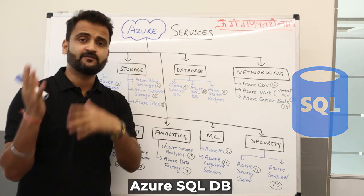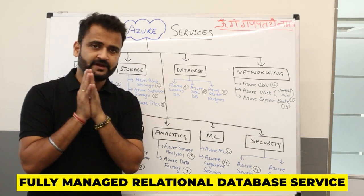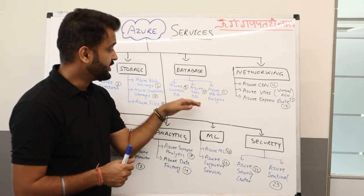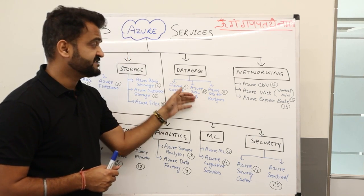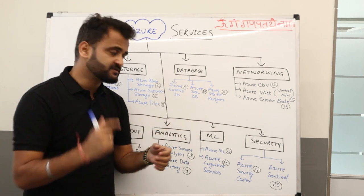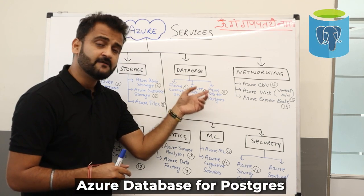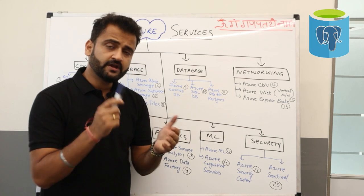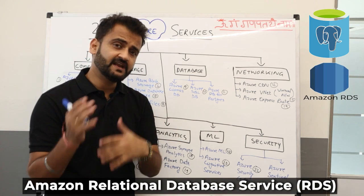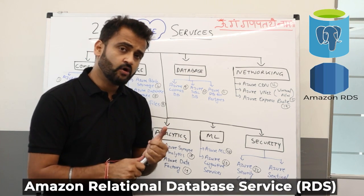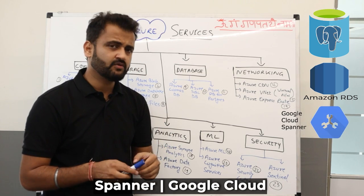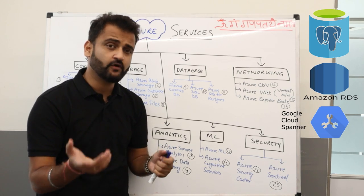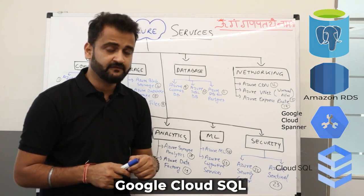Azure SQL Database is their fully managed platform-as-a-service offering. If you have a SQL database you want to migrate, you can migrate it to Azure SQL Database. They also have customized services for Azure DB for PostgreSQL and MySQL. On AWS the equivalent is AWS RDS — Relational Database Service — and on Google you have Cloud Spanner and Google Cloud SQL.